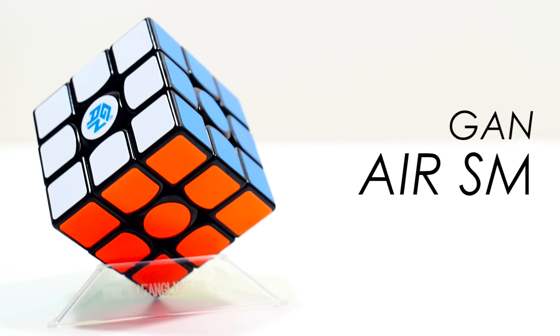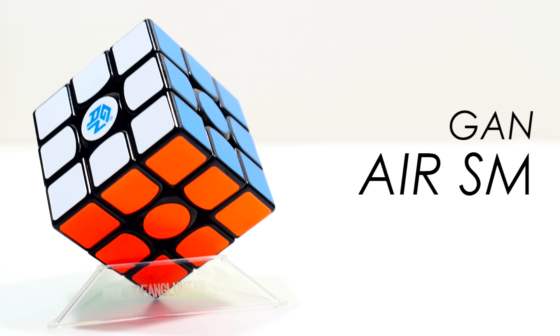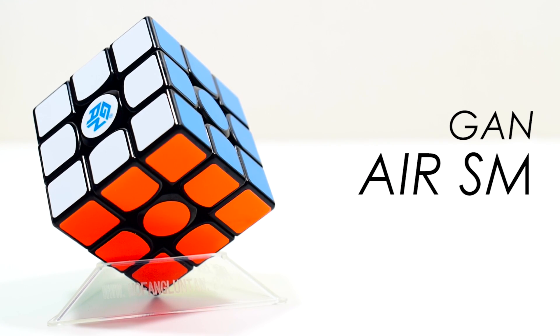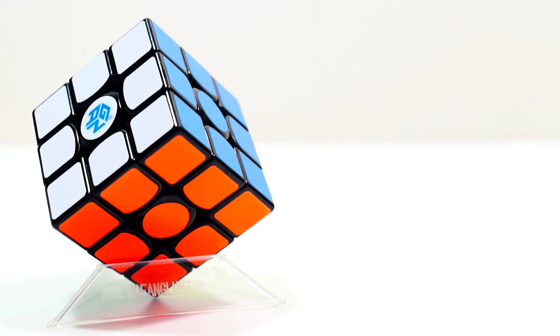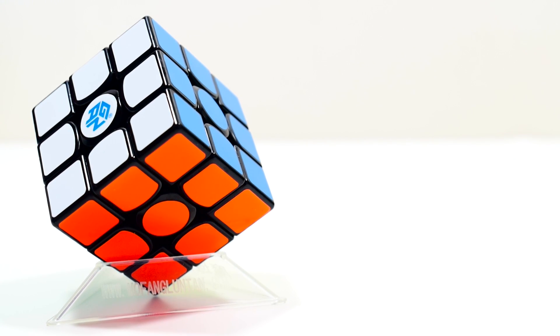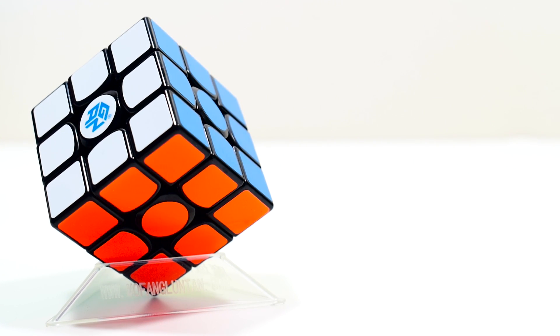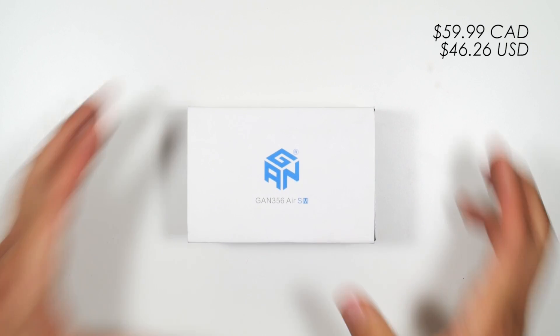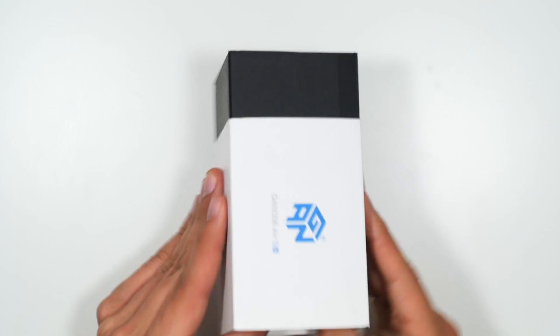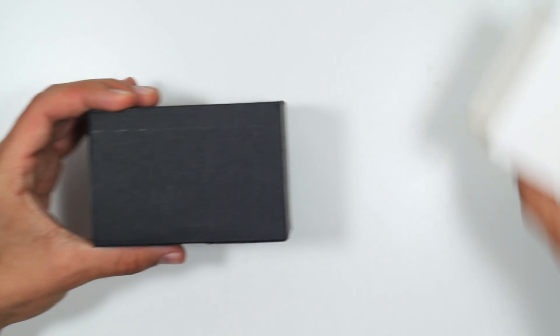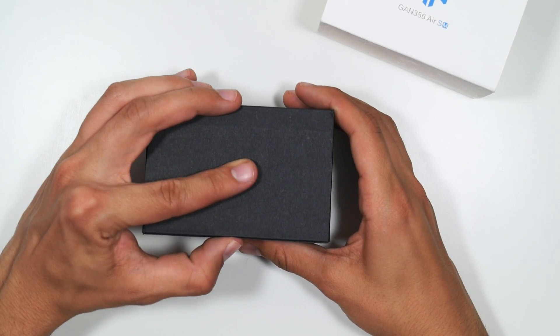Finally, in first place, we have the cube that pretty much everyone here is expecting, and that is the GAN Air SM. This cube comes magnetized like all on this list except the Valk, and is just a phenomenal cube in terms of feel, quality, and what you get in the box. This cube's in first, but it definitely comes with a hefty price tag at around $60 Canadian or $45 US dollars, and the reasoning for that price can be seen in the design and attention to detail that goes into this puzzle.